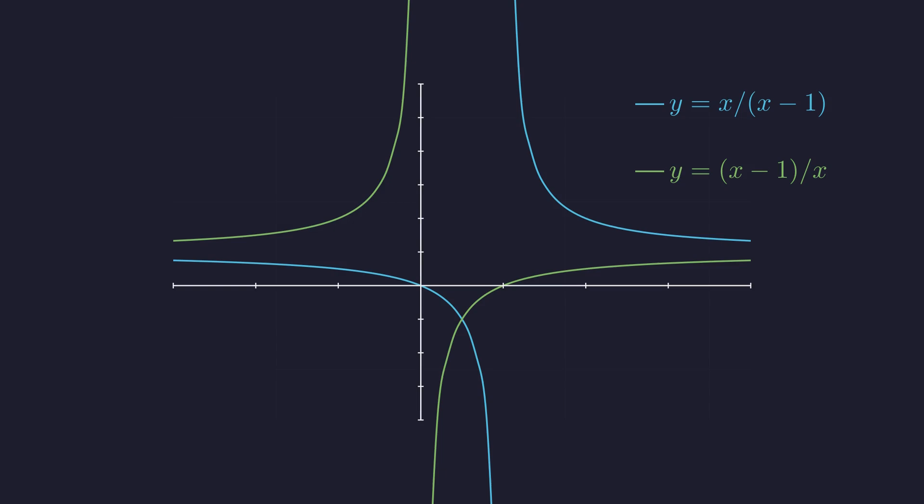Here's the blue curve for the left side, and the green curve for the right side. Notice they cross at exactly one point. Let me highlight that intersection point for you. You can see the x-coordinate is exactly one half. It's a nice visual confirmation of what we found algebraically.